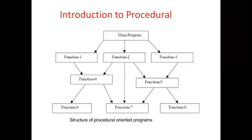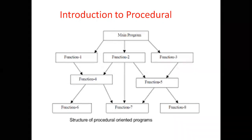How does procedure-oriented programming work? We divide our programs into a number of functions, and each function can be shared by other functions. Function four has the properties of function one and function two — it means function one and function two are like global functions for function four. In this way, procedure-oriented programming works.